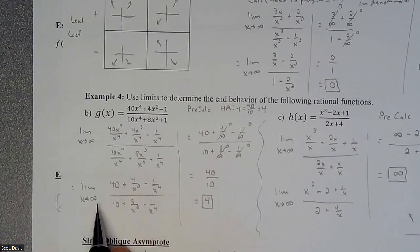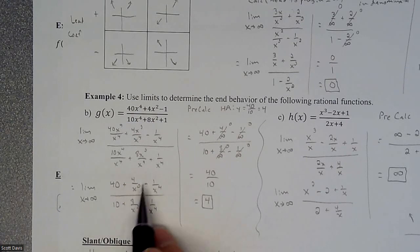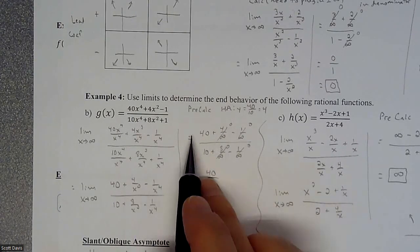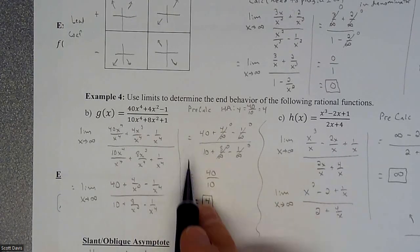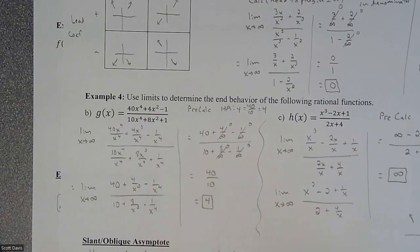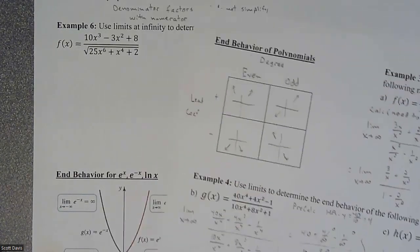At the end of the day, we still had to plug in on the limit. When we plugged in, these values became zeros, and it left us with some constants that we could put together to really find our limit and justify it with calculus.